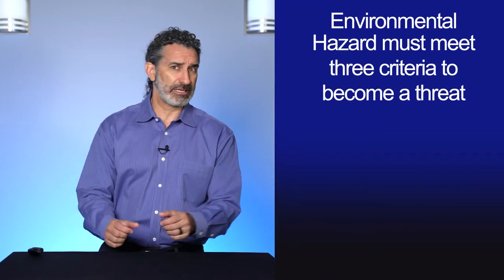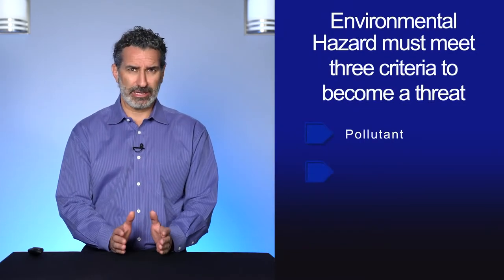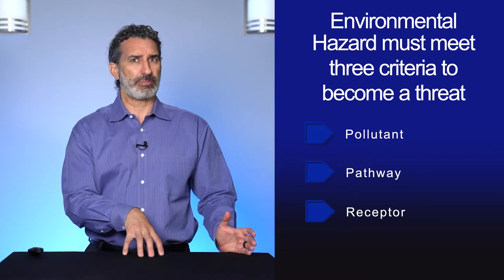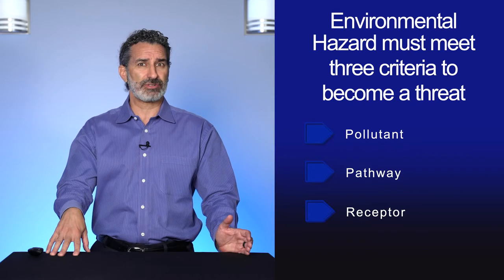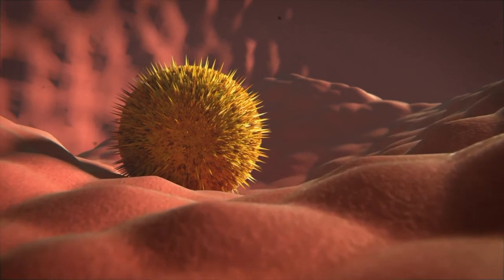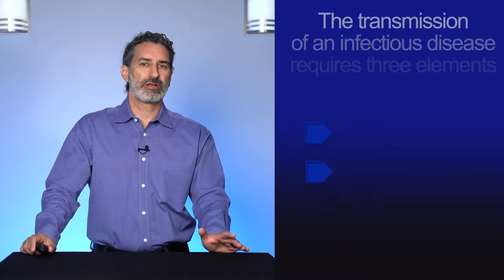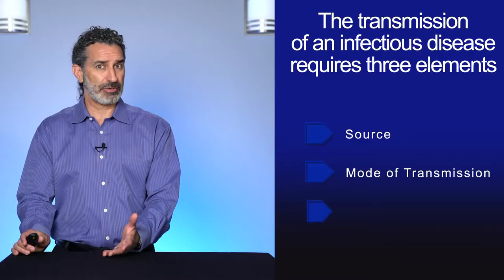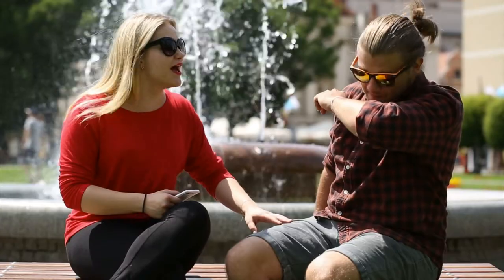A general rule of thumb is that in order for someone to get sick from an environmental hazard — chemical, biological, or radiological — you have to have a pollutant, a pathway, and a receptor. Without a pollutant, there's no problem. If you have a pollutant but no pathway to your receptor, it's no problem. And if you have no receptor, no one will become injured or infected. The transmission of infectious agents in a healthcare setting requires three elements: a source or reservoir of infectious agents (your pollutant), a mode of transmission from infected to healthy individuals (your pathway), and a susceptible host (your receptor).